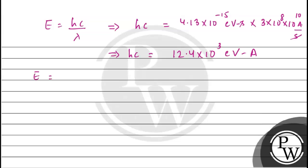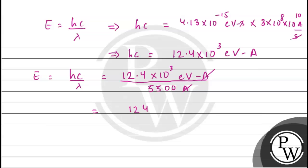Now energy is equal to hc upon lambda, which is 12.4 into 10 to the power 3 electron volt angstrom divided by 5500 angstrom. The angstrom units cancel, giving us 12400 divided by 5500. The energy E is equal to 2.25 electron volt, which is the energy of green light.